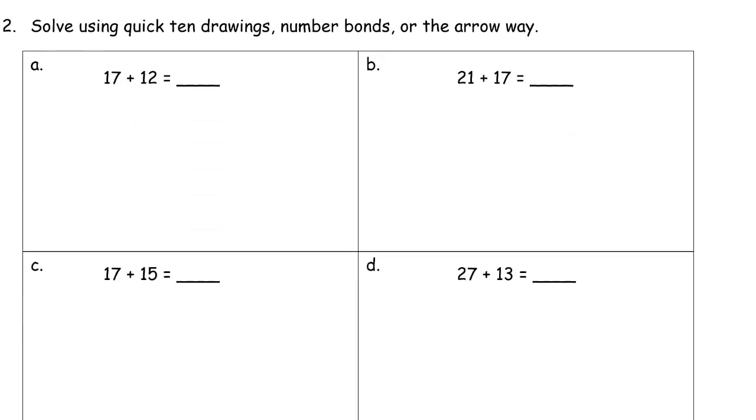And just more of the same. 17 plus 12. That 2 and the 7. That's going to be 9. So that's less than 10. So this strategy is going to be easy enough. Add the 2 or the 10 first. It really doesn't matter for this one.